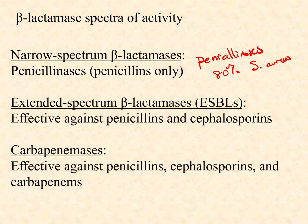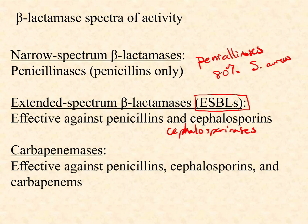The next group is what we call extended-spectrum beta-lactamases, very commonly called ESBLs — an acronym worth learning because it comes up a lot in the clinic. These ESBLs are really cephalosporinases that are useful against both the cephalosporins and the penicillins. When bacteria show up with one of these ESBLs, we've lost all of our cephalosporins and penicillins with very few exceptions. ESBLs aren't at the same prevalence as penicillinases yet, but they are taking off and heading into an exponential spread across the globe.